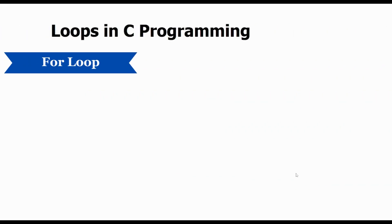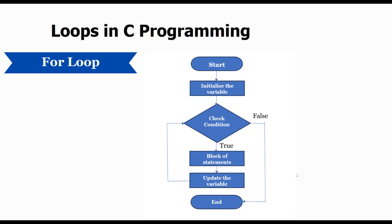Let's understand the for loop with the help of a flowchart. After the start, the initialization of the variable is done. Then the condition is checked. If the condition is true then the block of statements will be executed and we update the variable to get a new value. This updated value is checked again in the condition, and the block of statements is repeated till the condition becomes false. Once the condition is false then we stop the process.